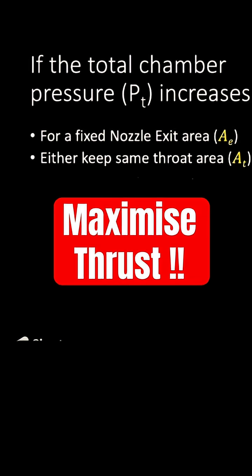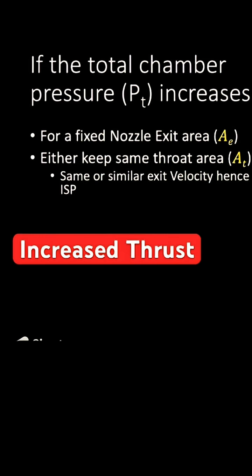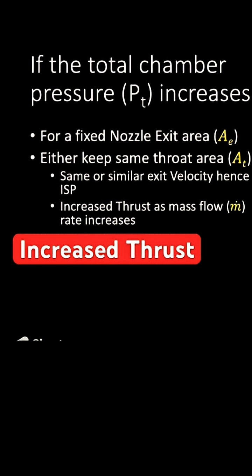We've got two clear options here. Option one: maximize the thrust. To do so, you keep the dimensions the same — same expansion ratio — but with a much higher mass flow rate. What do we get? Higher thrust, but maybe similar ISP.